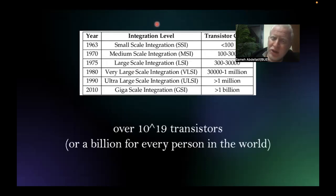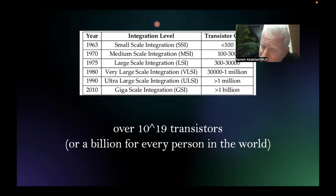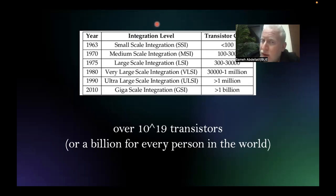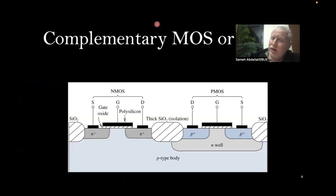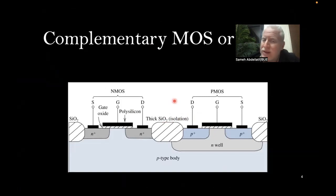Now we are reaching hundreds of tera-large scale. Nowadays, per each person on earth, there are correspondingly 10¹⁹ transistors — 10 billion transistors per human being. This is how deeply we have gone into ultra giga large scale integrated circuits. It is very interesting to know how we reached this complementary MOS technology. This slide, which you may have seen before in Electronics 1, describes the CMOS technology we are now going to construct step by step.